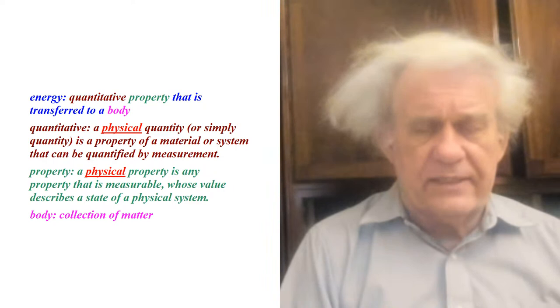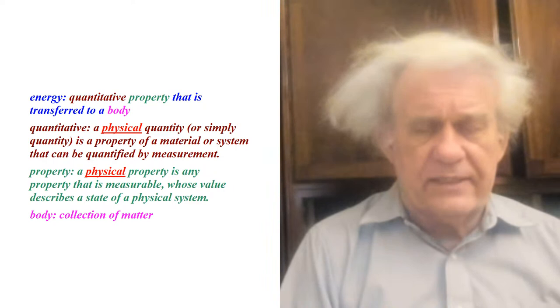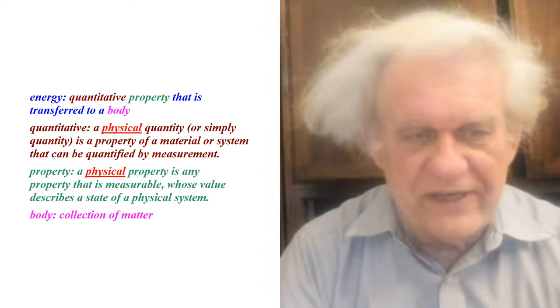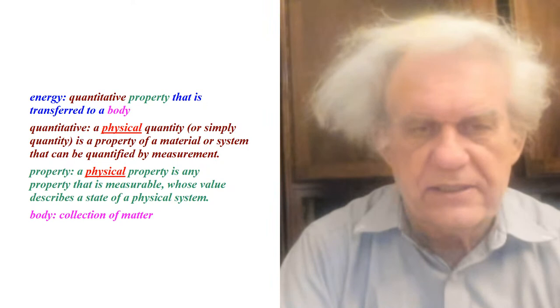What is a body? A collection of matter. What is matter? A bunch of bodies. We learned nothing from these definitions, and you can see how little they've put their brains to work in defining these terms. And that's when they accuse you of doing semantics. These definitions are ridiculous — they have no place in science, let alone in physics. That's where the problem starts: they don't have good definitions for any term.